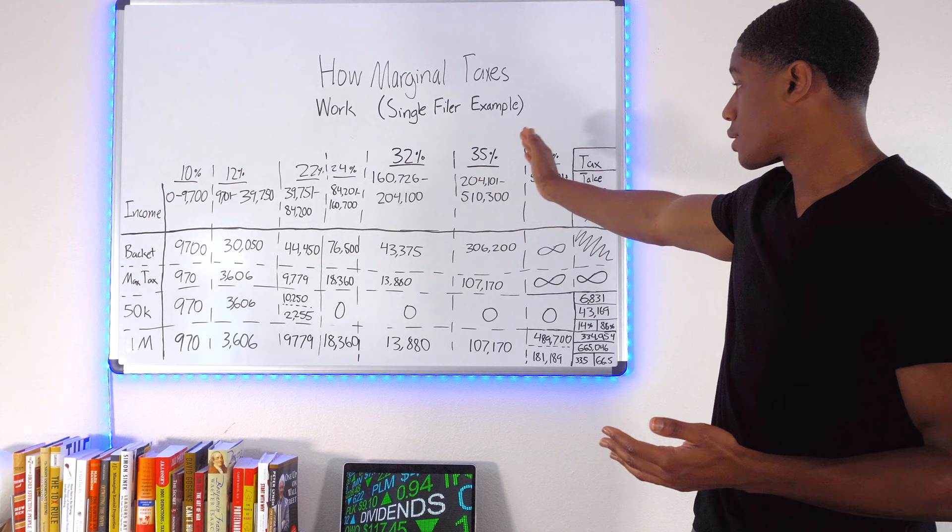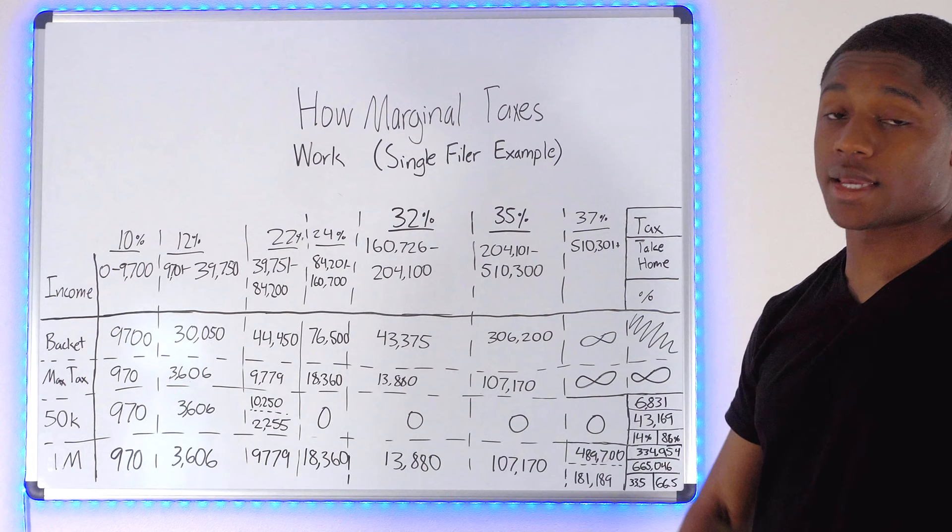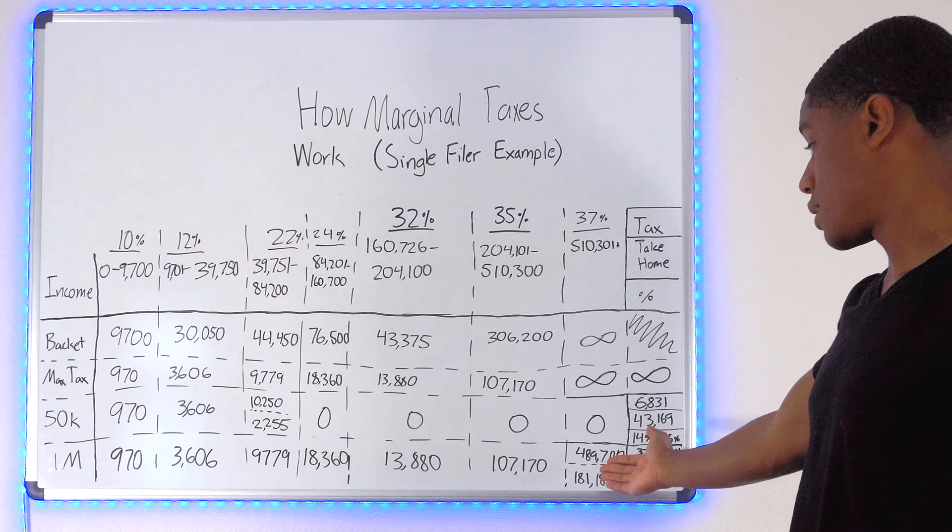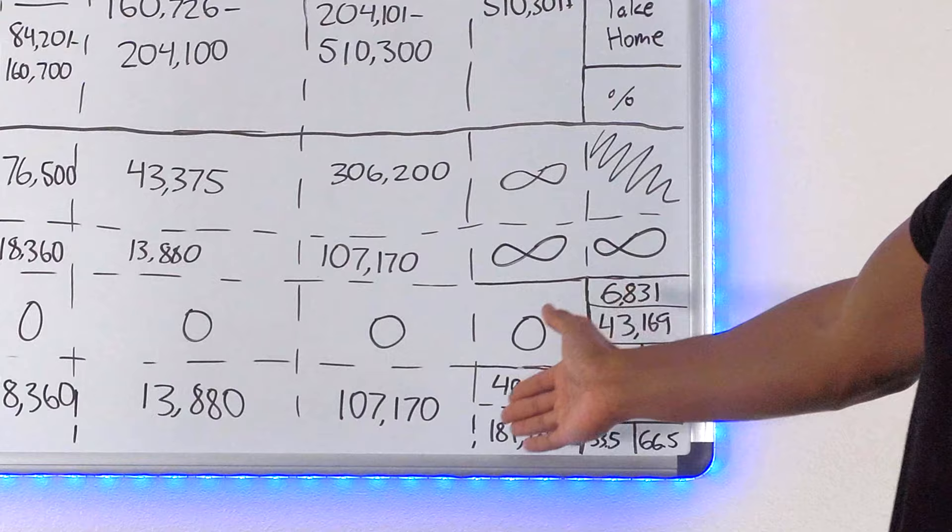Basically, if you are above all of these tax brackets, you're going to pay this max tax. So that's why we set that up. You're going to pay that 107,000. You're going to pay that 13,888. You're going to pay that $18,360. So you're going to pay all of these amounts. Plus you're going to pay whatever you owe in this amount, which in this case, they have $489,700 in this amount. So they're going to pay $181,189.